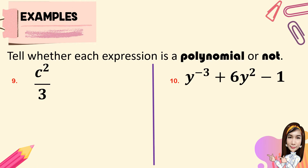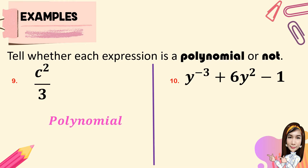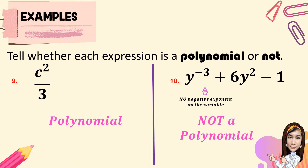For number 9, we have c squared over 3. And 3 is not a variable — it's an integer — therefore this expression is a polynomial. For the last, we have y to the negative 3 plus 6y squared minus 1. There must be no negative exponent on the variable, therefore this expression is not a polynomial.